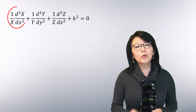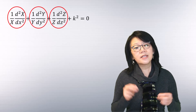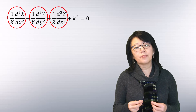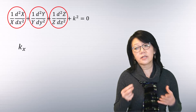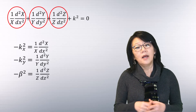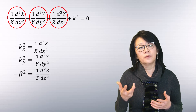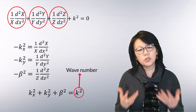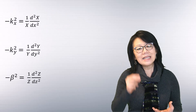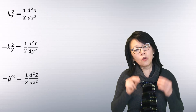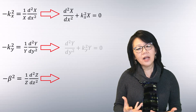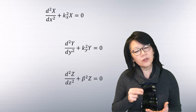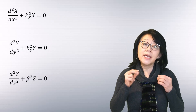A solution for this differential equation exists only if each of the terms is equal to some constant. Using the separation constants kx, ky, and beta, and dividing as shown, they are related to the wave number as shown. These three equations are also expressed as follows.